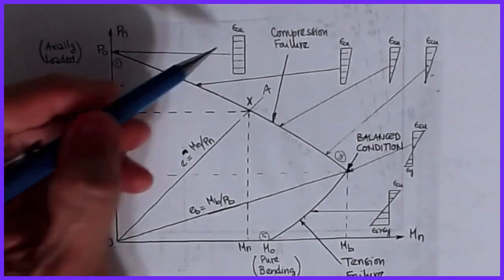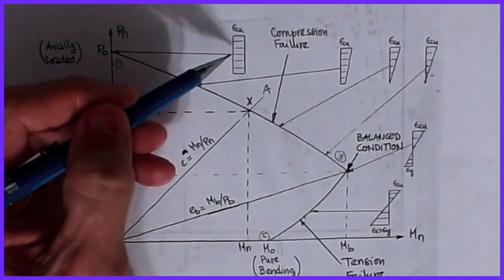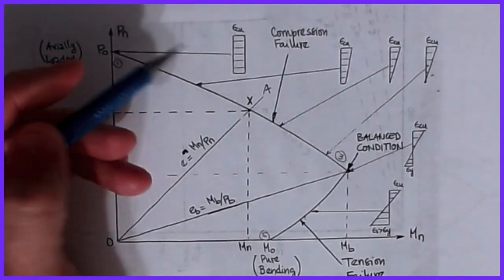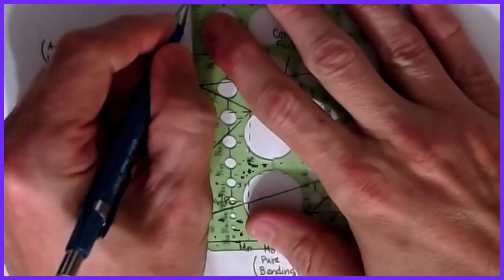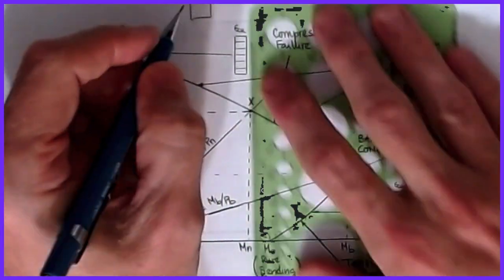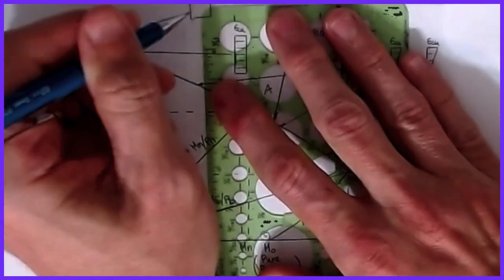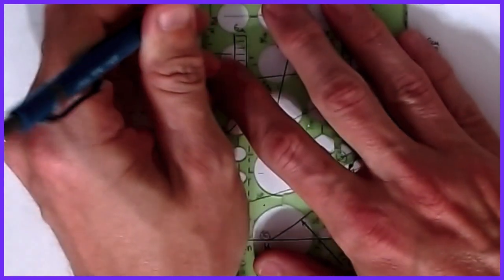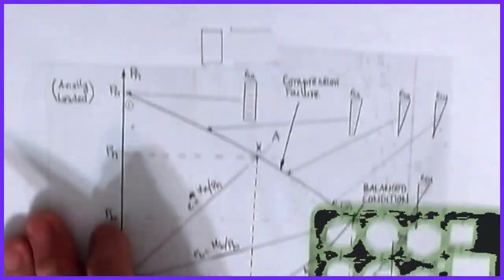When it's pure axial, the strain diagram looks like this on the cross section. If we imagine that we're going to draw our cross section on this, then the corresponding strain for the pure axial case would be something that looks like that, right?